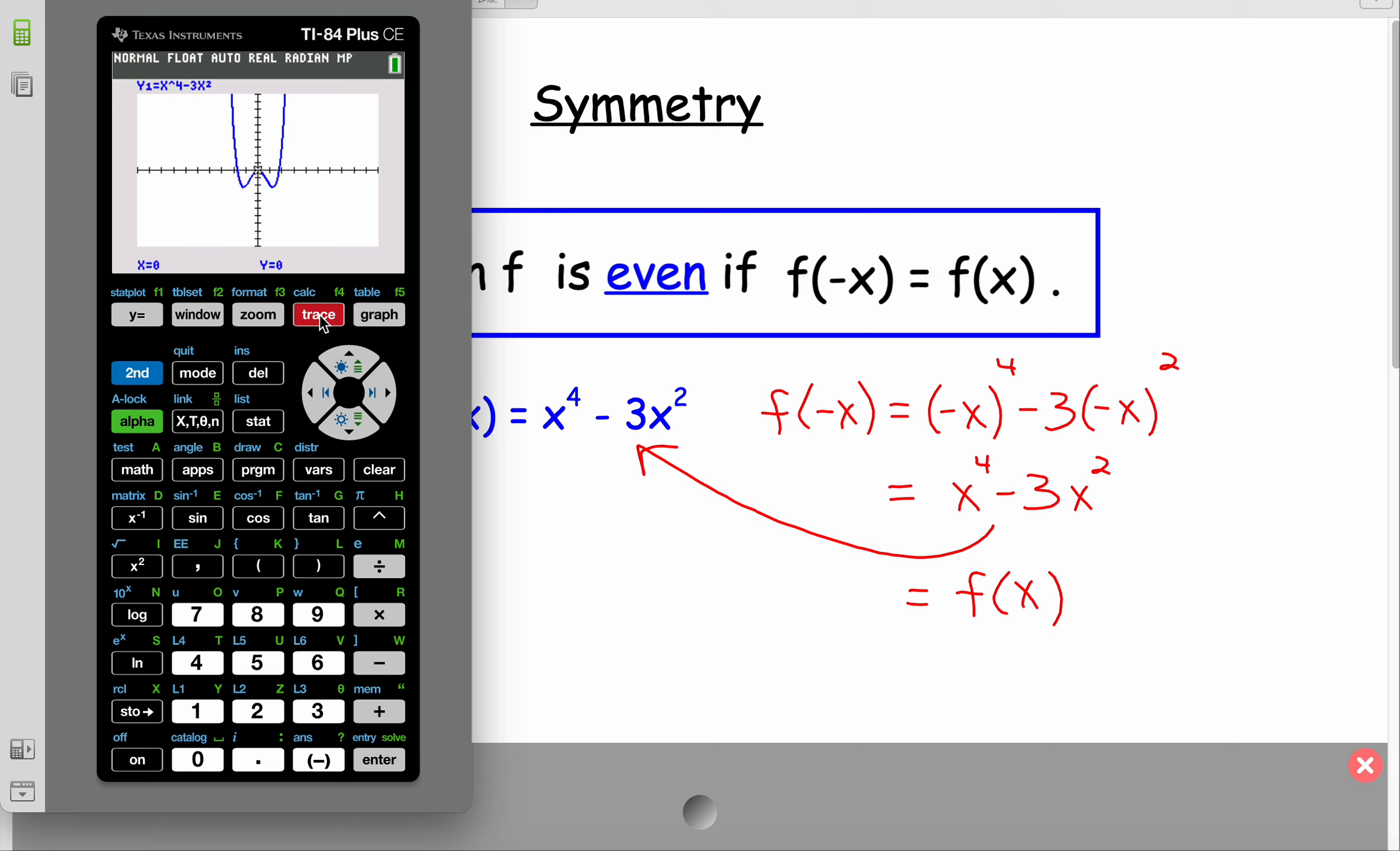What that means is that if I have, let's say, 1, f of 1 is equal to negative 2. Well, f of negative 1 has the same value, negative 2 for an output. So every input gives me an output, but then the opposite of that input gives me the same output.